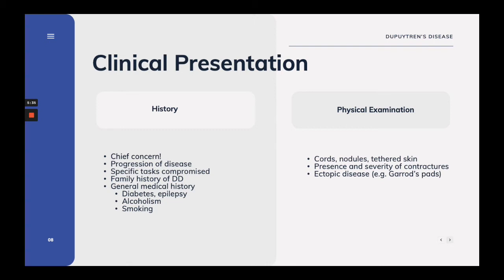On physical examination early in the disease, you may notice palmar skin thickening or pitting. Early Dupuytren's can often be mistaken for trigger finger or stenosing tenosynovitis. Patients may also present with painless nodules or cords in the palm, as well as the development of progressive flexion contracture. Ectopic disease may be located distant to the palmar fascia. Patients with bilateral disease may commonly present with Garrod's nodes.